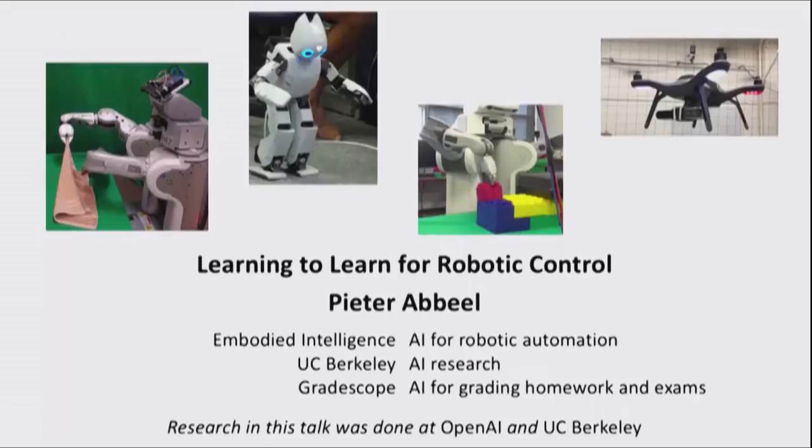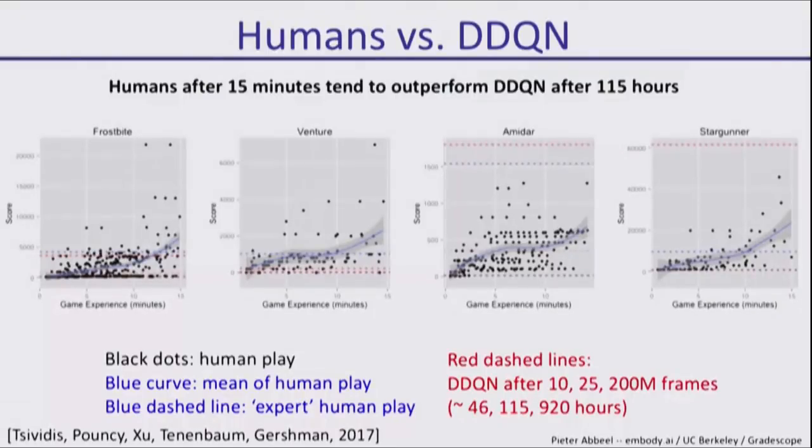I'd like to tell you about learning to learn for robotic control specifically. A good starting point is to look at the difference right now between how fast reinforcement learning agents learn versus how fast humans learn.